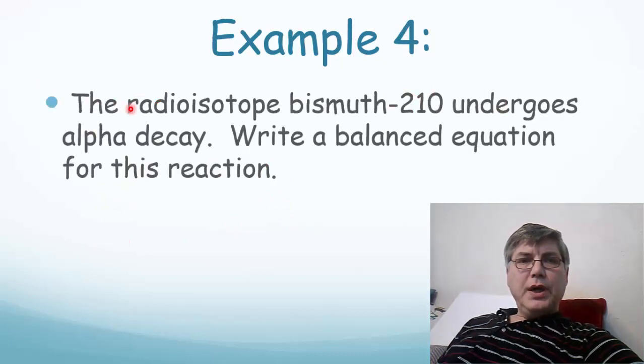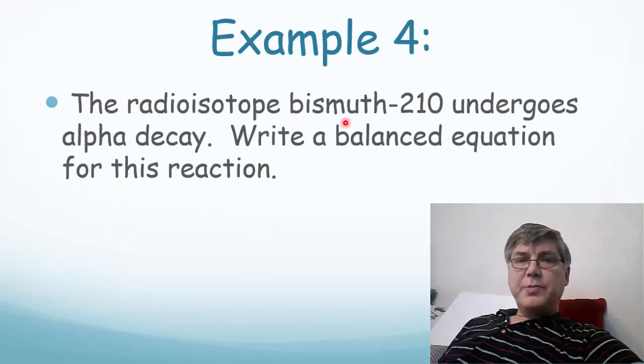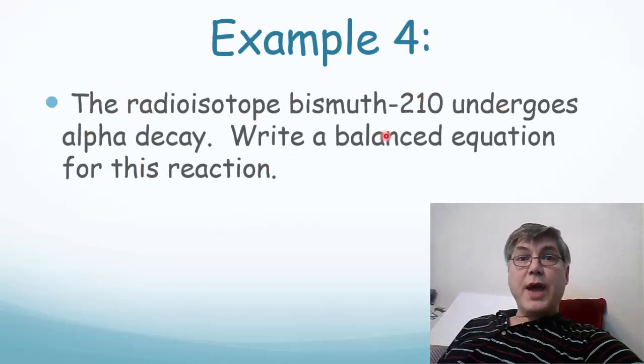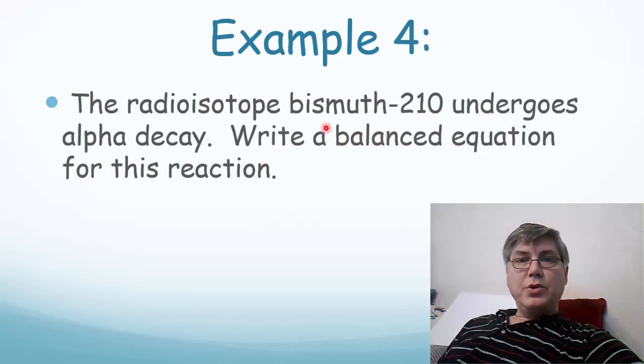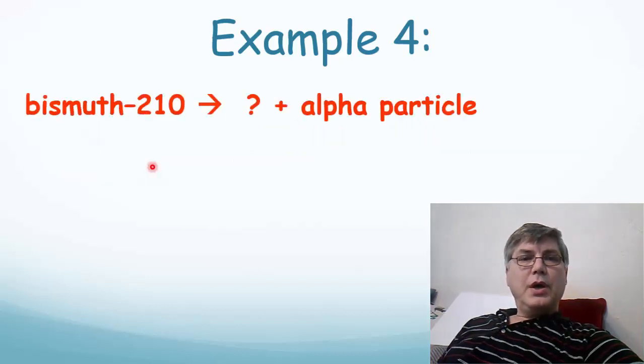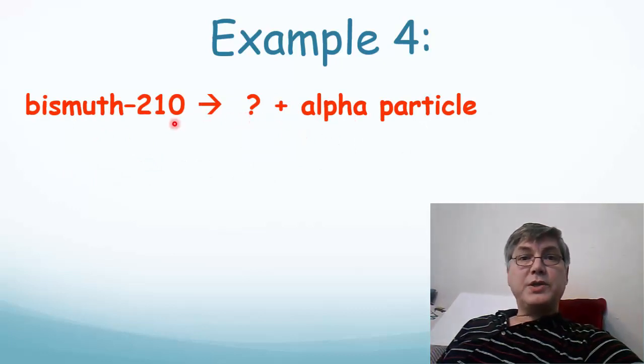Let's do another example. In this case, the radioisotope bismuth-210 undergoes alpha decay. Write a balanced equation for this reaction. So the first thing we need to do is recognize that we've got bismuth-210 and an alpha particle on the other side of the equation. So bismuth-210 decays into something and an alpha particle. What's the something?